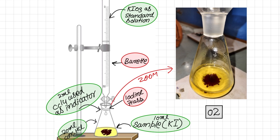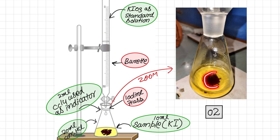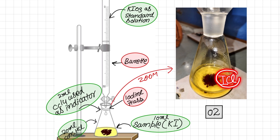This is the second stage of the titration. The outer region returns to yellow while the center CCl4 region, containing most of the liberated iodine, remains dark. We continue adding potassium iodate from the burette into the iodine flask so that all the iodine present in the CCl4 is finally converted into I+ form. The HCl present then reacts with this I+ to form the final product, iodine chloride (ICl).